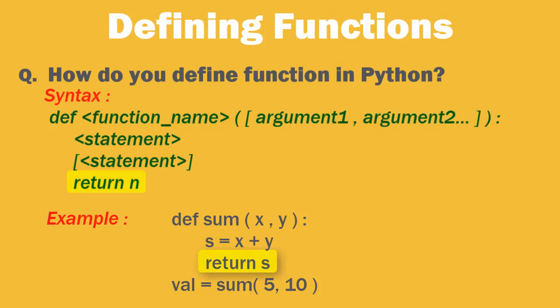The function block ends where the indentation ends like for if and for statements. The statement return exits a function, optionally passing back data to the caller. A return statement with no arguments is the same as return none. If there is no return statement, then that function is called void function.